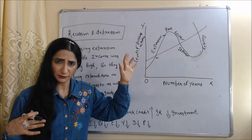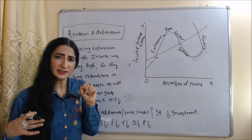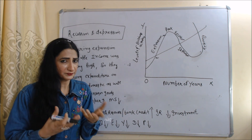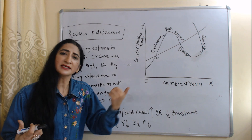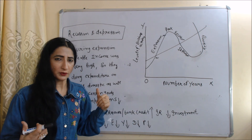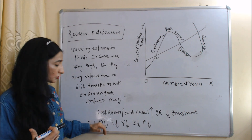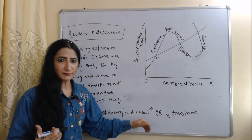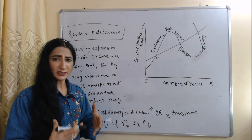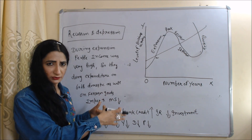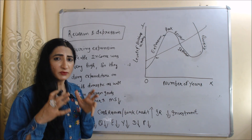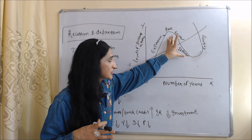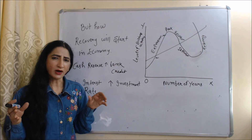As bank credit reduces, banks will increase interest rates and eventually investment will fall. A second reason is that during expansion, banks were giving loans to many investors. After a certain time period, banks realize their cash reserves are reducing, so they reduce bank credit and increase interest rates. When investment falls, output falls, employment falls, income falls, demand falls, and prices fall. All positive economic indicators are reducing, so the economy moves towards recession and depression.